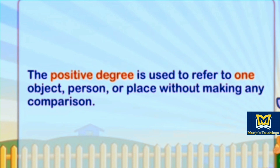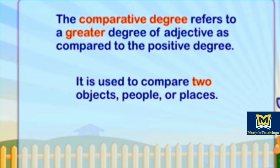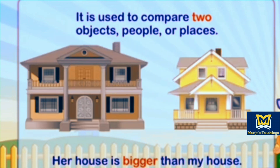The positive degree is used to refer to one object, person or place without making any comparison. Comparative degree refers to a greater degree of an adjective as compared to the positive degree. It is used to compare two objects, people or places.